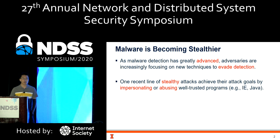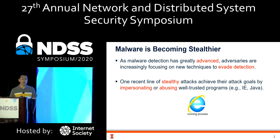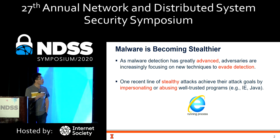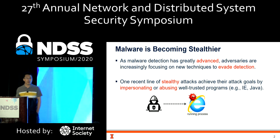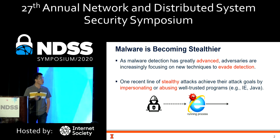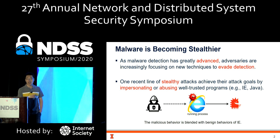Besides simple techniques like renaming a process name, there are stealthy techniques an attacker can use to achieve this purpose. For example, if there is a running IE process on the victim host, the attacker can use different techniques to hide their malicious payload into the running process, then perform the attack within the memory space of these running processes so that this malicious behavior will be blended with the benign behavior of IE, making detection difficult.